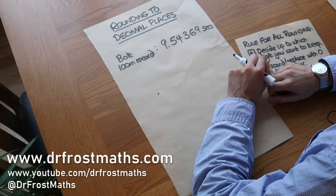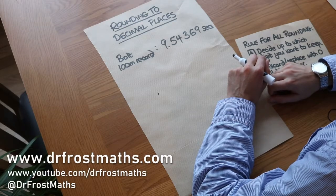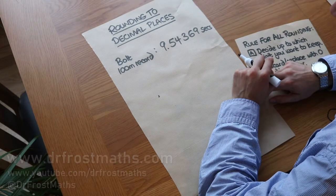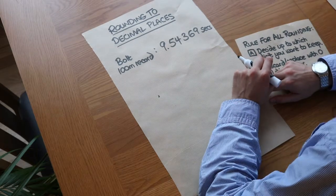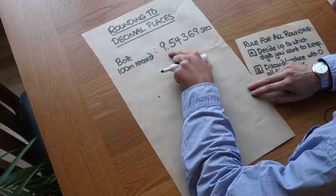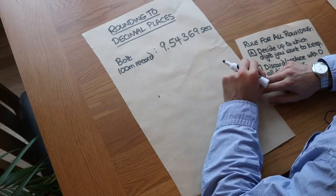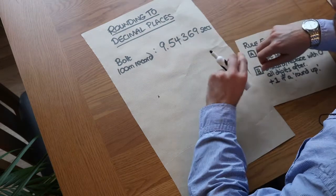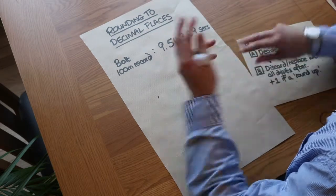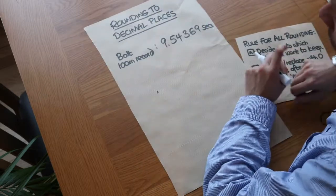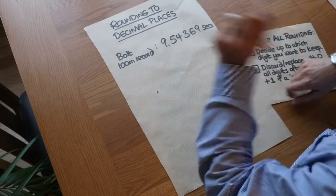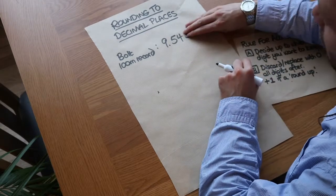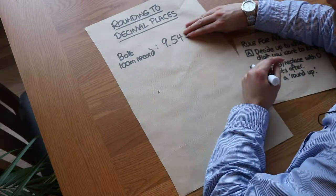Hello and welcome to this video on rounding to decimal places. Let's say we were recording someone's 100 meter running time. Usain Bolt's time in the Berlin games was 9.54 something something seconds. But sometimes we need to discard some of these digits — we don't want that much accuracy and we might just say his time is 9.54 seconds. So we're keeping some digits after the decimal point and discarding the others to reduce the accuracy.